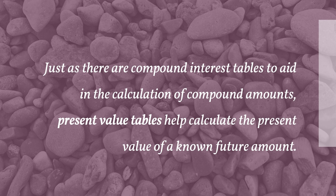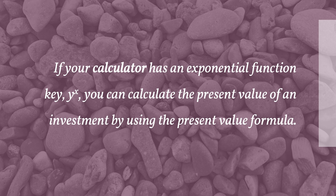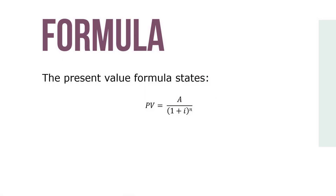Just as there are compound interest tables to aid in calculating compound amounts, present value tables can help calculate the present value of a known future amount. If your calculator has an exponential function key Y^x, you can use the present value formula: PV = A ÷ (1 + i)^n, where PV is present value, A is the compound amount, i is the interest rate per period expressed as a decimal, and n is the total compounding periods (years times periods per year).